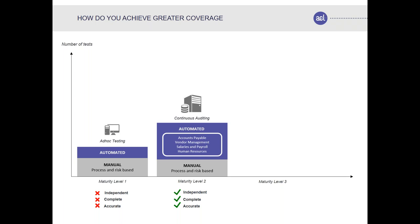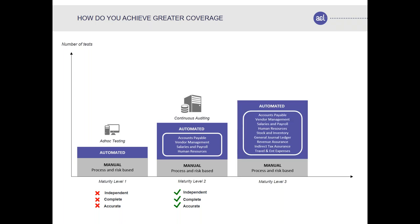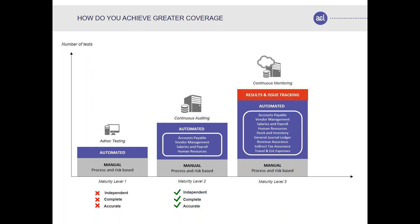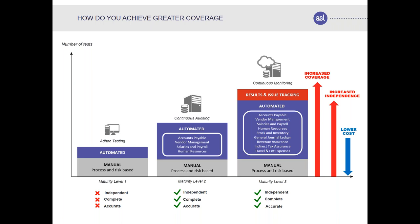At maturity level three, once continuous auditing is running, the business gets involved and says there are also things they want to analyze. Business has a much wider scope than audit — they're looking to analyze more things and remediate what has gone wrong, whereas audit is typically focused on the annual audit program for signing off control checks. Data is continually and independently extracted, achieving completeness and accuracy, with the goal of increased coverage and independence at a lower cost.